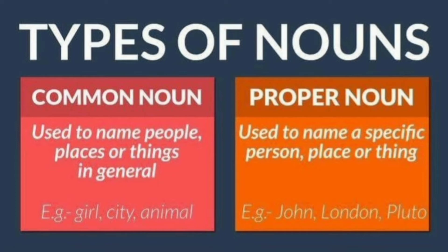The next category is proper noun. Proper noun is a special name given to a person, place or a thing. For example, John, London and Pluto. These nouns are written in capital letters.